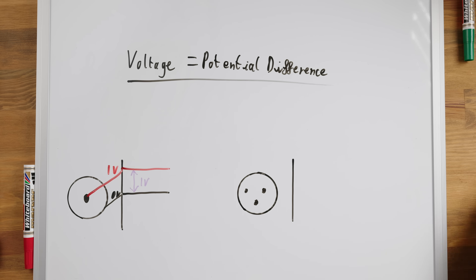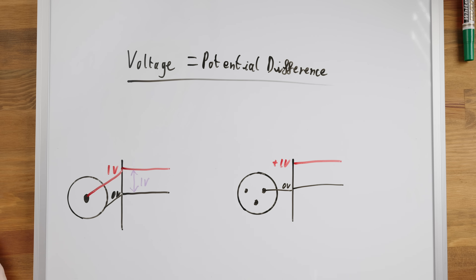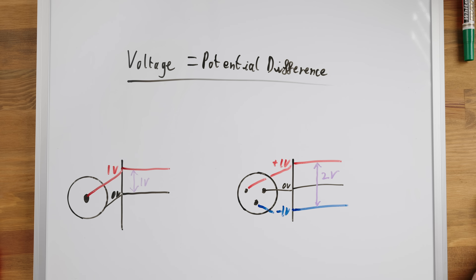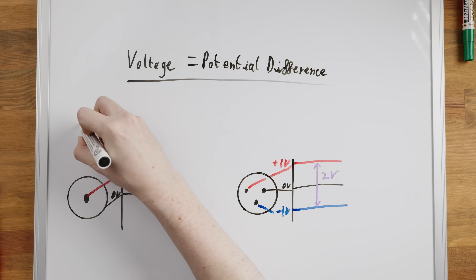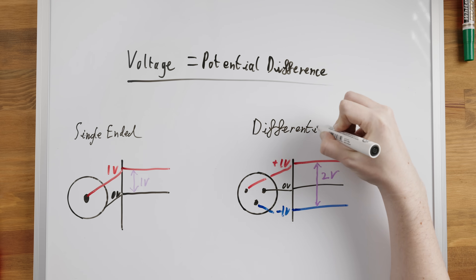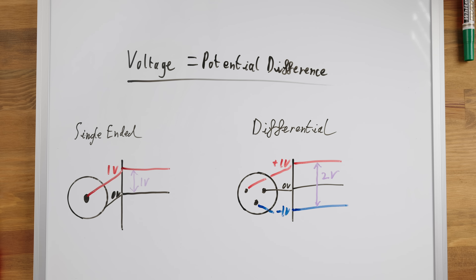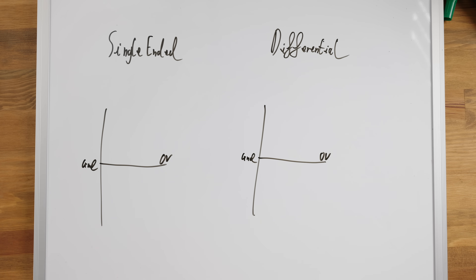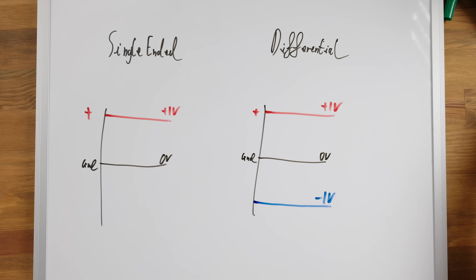In a differential XLR connection, it's called differential because instead of the signal being the level of the positive connection versus ground, it's the difference between the positive and negative connections — not ground. So single-ended versus differential describes whether the signal is being transferred via a single active connection versus ground, or the difference between two active signal connections.